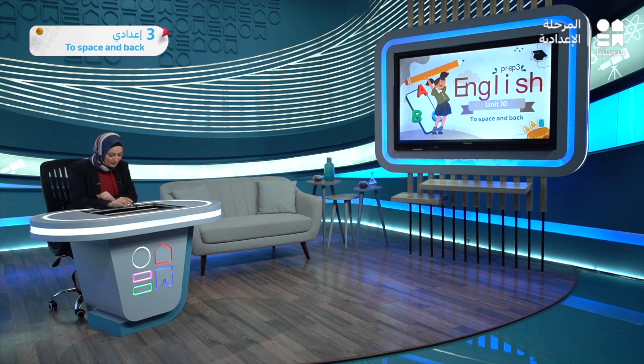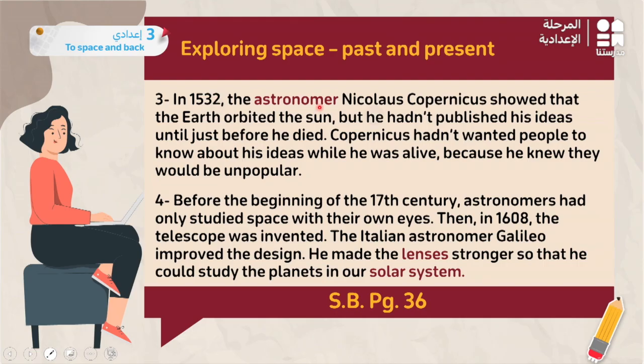Islamic astronomers in the 11th and 13th centuries thought that Ptolemy's idea might be wrong — that it wasn't the sun orbiting the earth. Nicolaus Copernicus later proved that the earth orbits the sun, disproving Ptolemy's idea. However, he didn't publish his ideas until just before his death because he knew they would be unpopular — people believed the sun went around the earth.